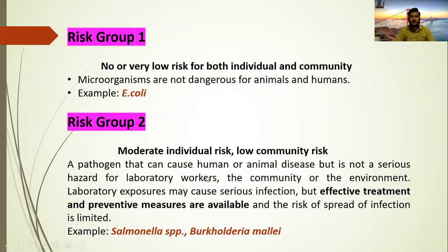Risk group 1 microorganisms have no or very low risk for both individual and community. These microorganisms are not very infective or dangerous for animals or humans, and they cannot cause serious infections in either animals or humans. An example of a risk group 1 microorganism is E. coli, which is a gram-negative bacterium.